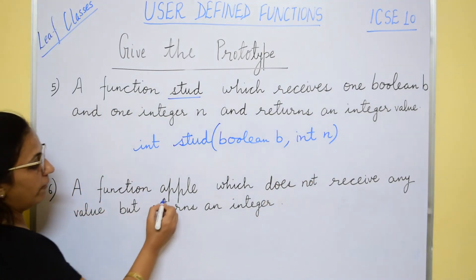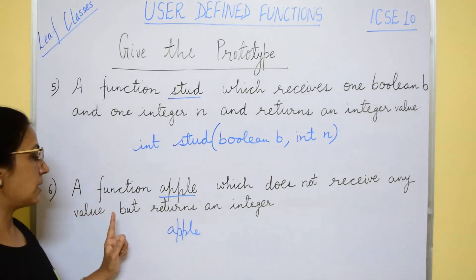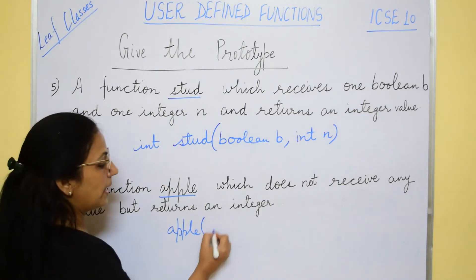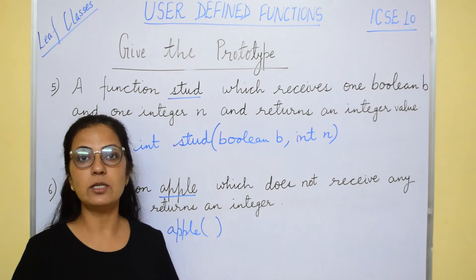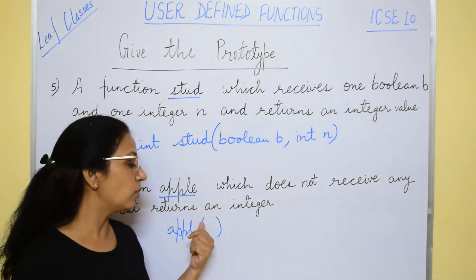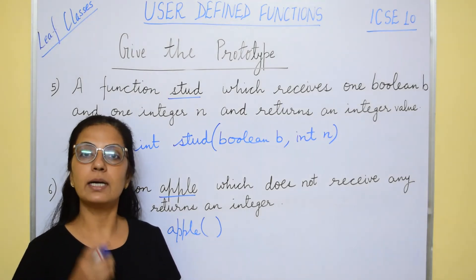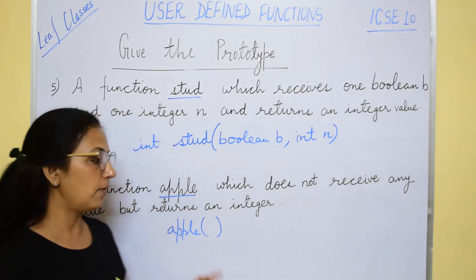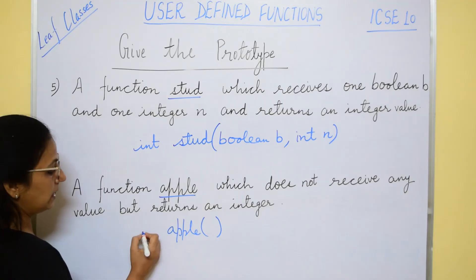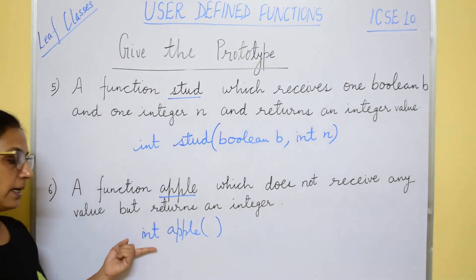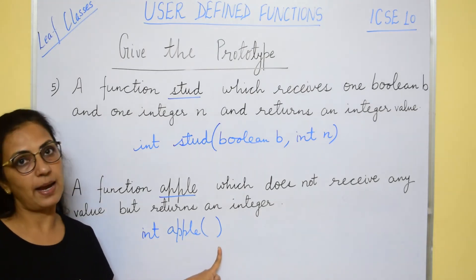The next is a function apple — apple is the function name — which does not receive any value. That means here only opening and closing brackets, nothing else. Sometimes children write void here thinking it is not receiving any value, but no — void is only when it is not returning. If it is not receiving, only empty brackets will be there. And it returns an integer, so the return type is int. So: int apple() — opening bracket, closing bracket — that's it.